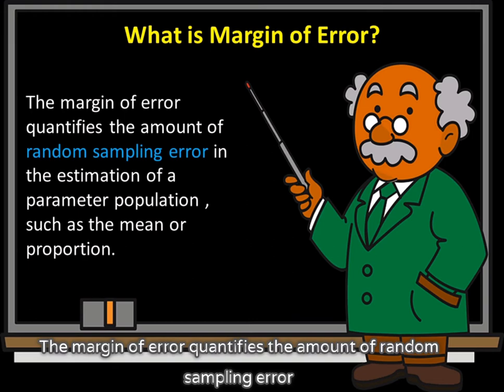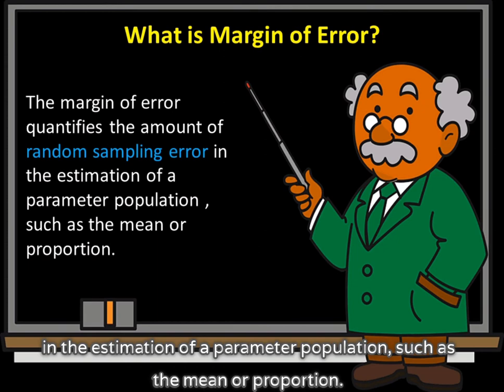The margin of error quantifies the amount of random sampling error in the estimation of a population parameter, such as the mean or proportion.